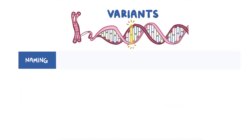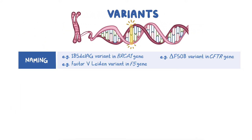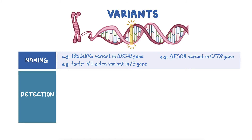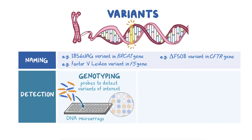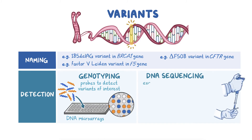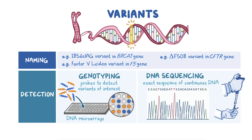Variants are named using a combination of letters, numbers, and symbols, but can also have descriptive names. There are numerous molecular techniques used to detect the presence of variants. One is genotyping, which uses DNA microarrays to look for variants of interest. Another is DNA sequencing, which determines the exact sequence of a continuous section of DNA.